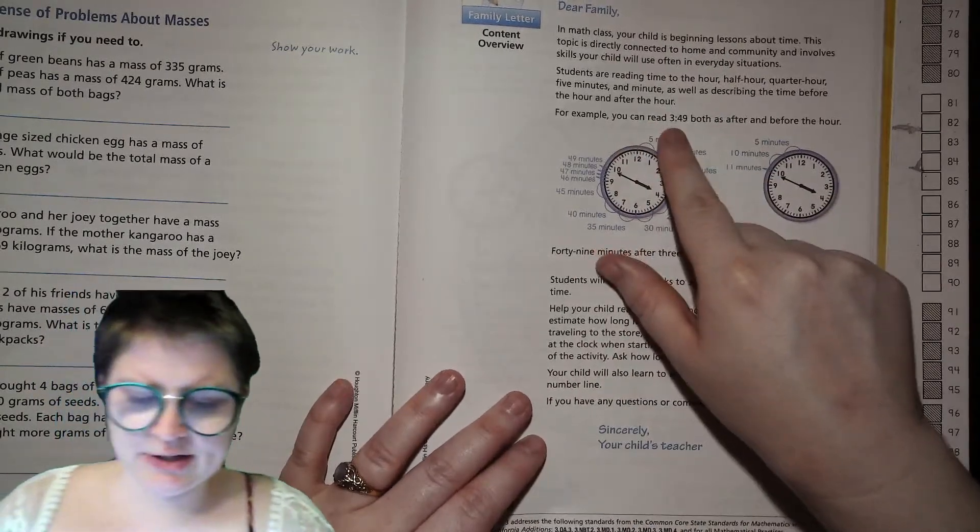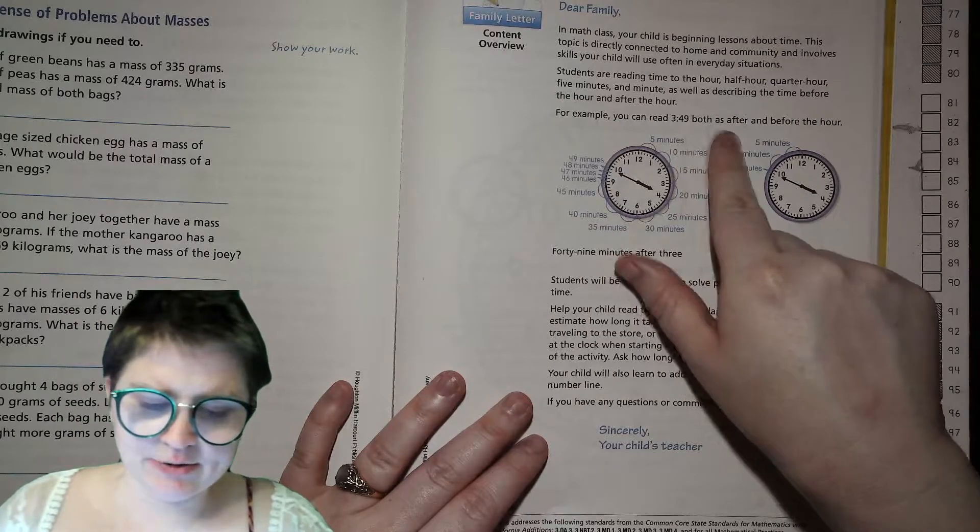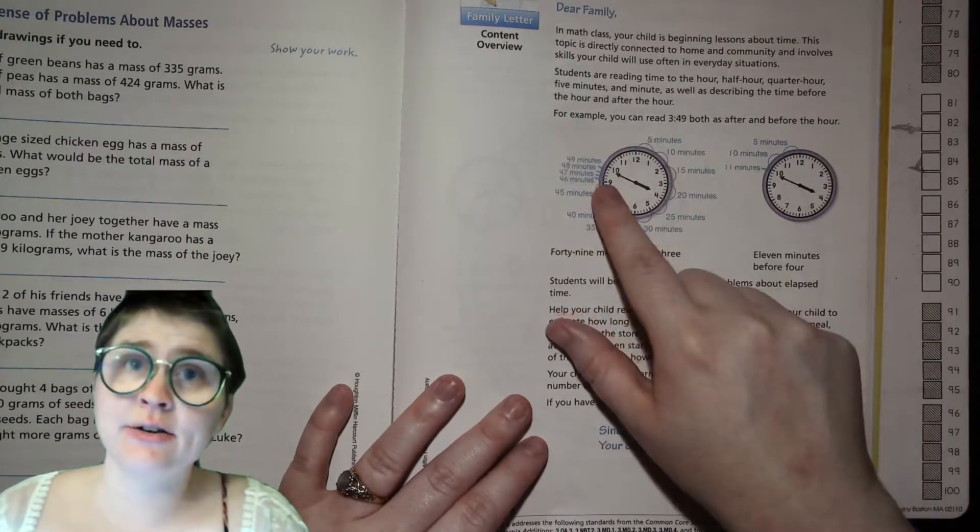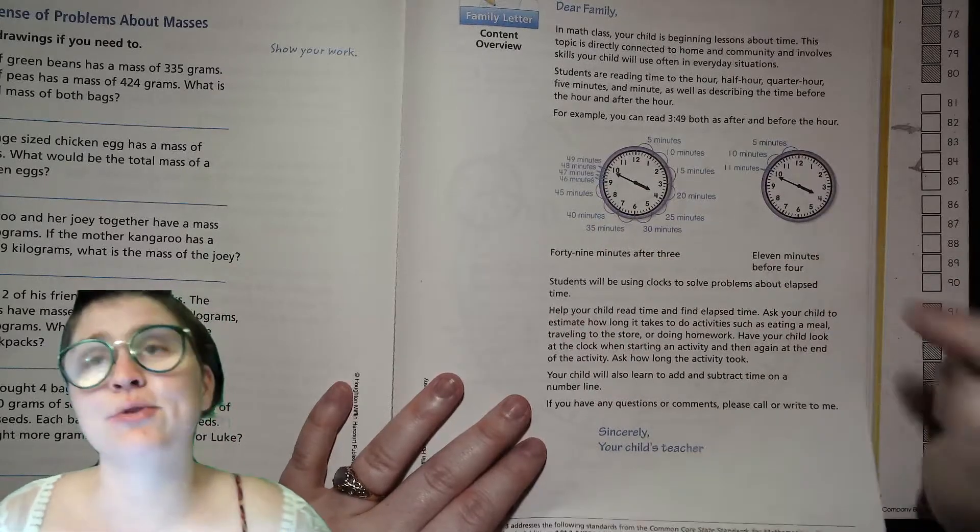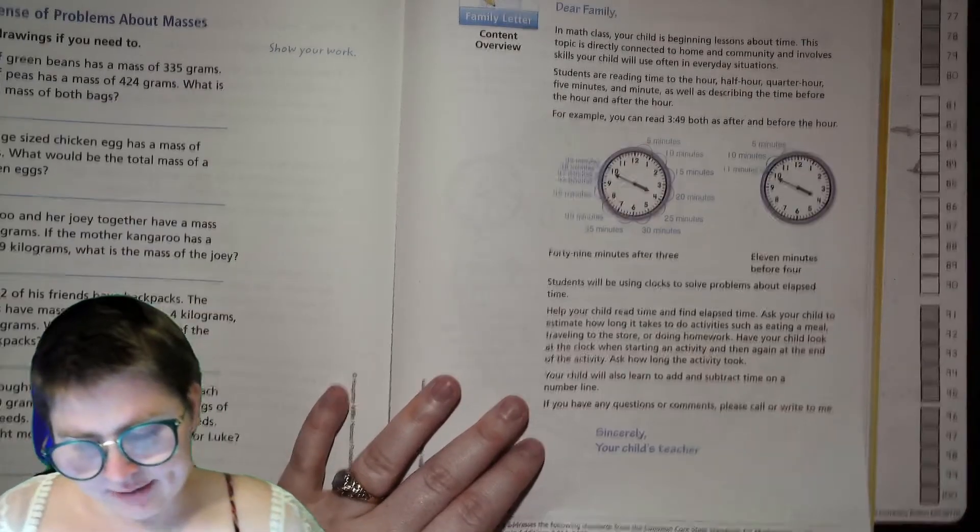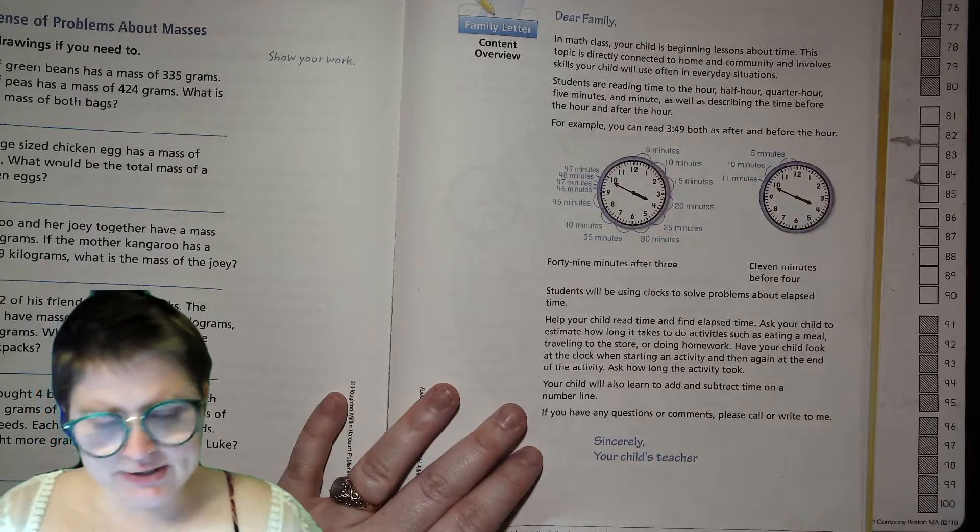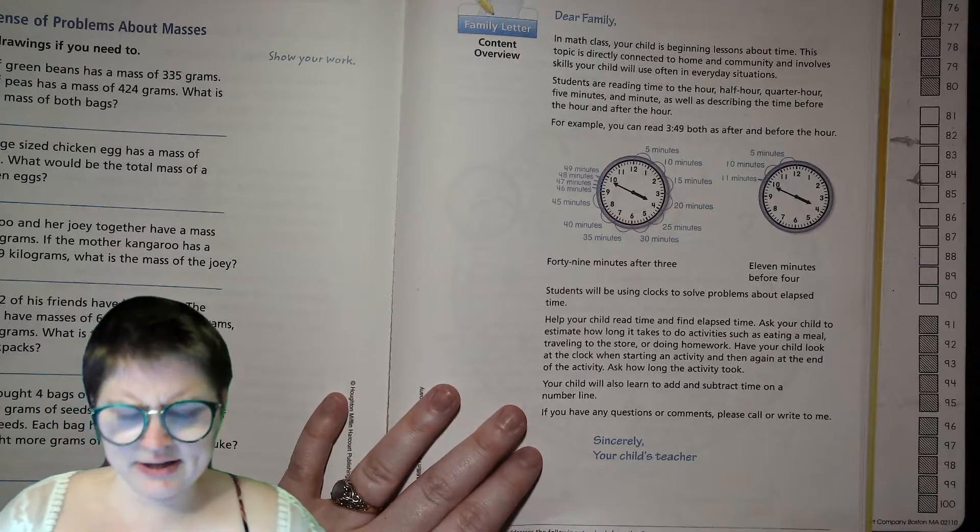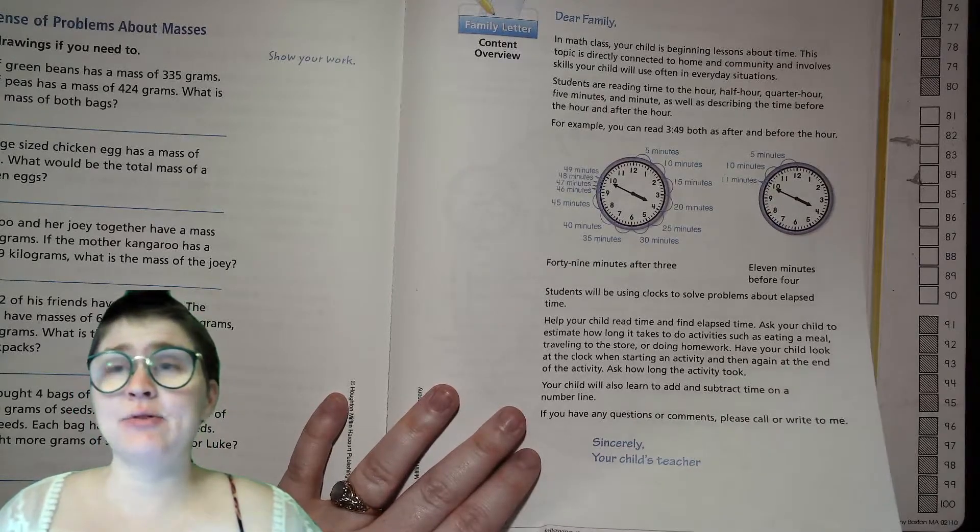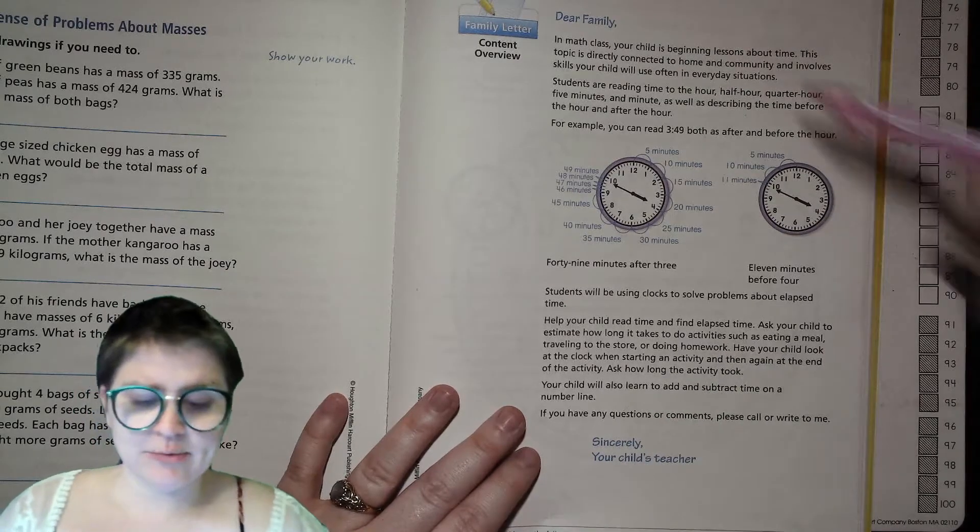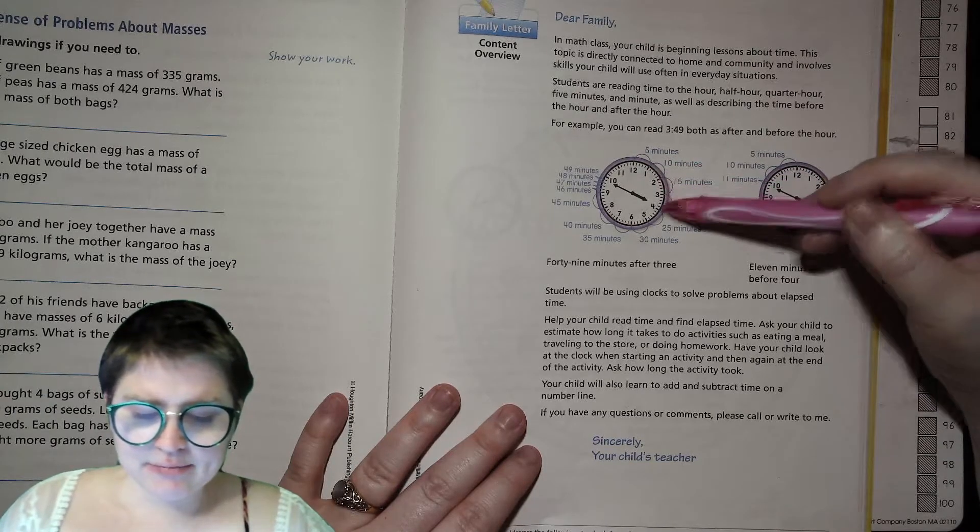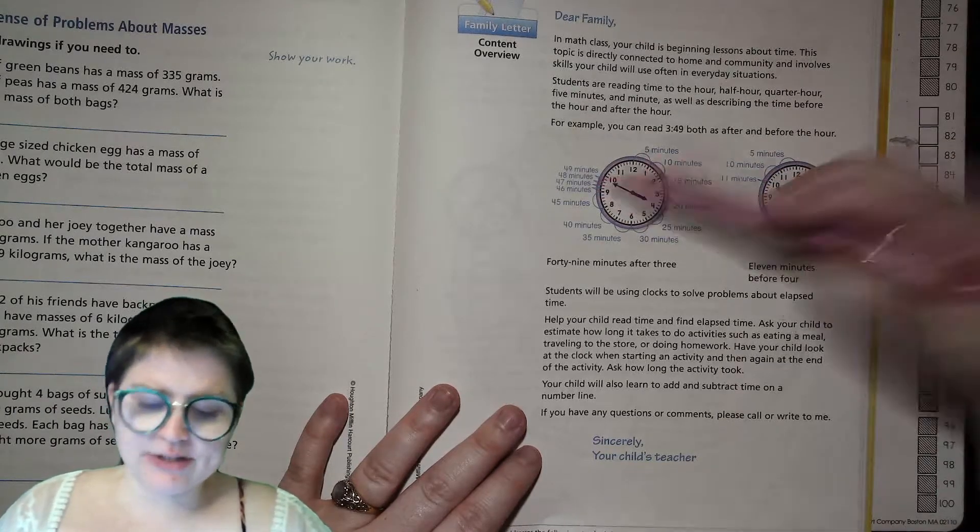For example, you can read 3:49 as both after or before the hour. So 49 minutes after 3 or 11 minutes before 4. And then we'll be putting that in both words and how it would look on a digital clock. And then just practice telling time. You'll get the hang of it. Take some practice. We'll be counting by fives between all the larger lines and then by ones for the smaller lines.